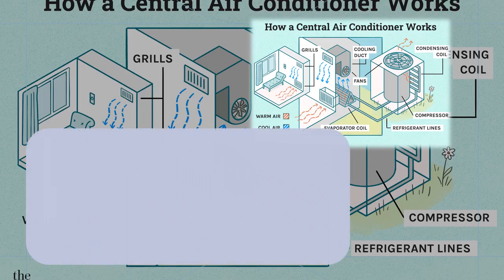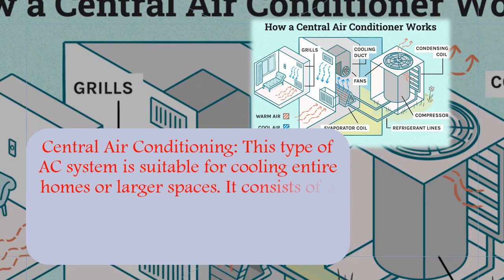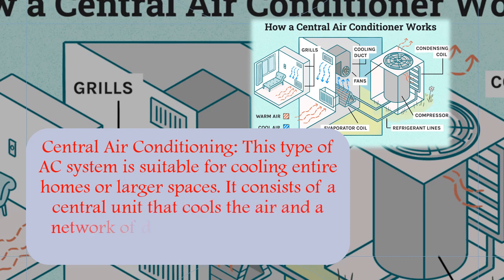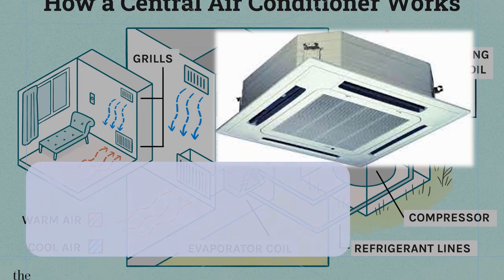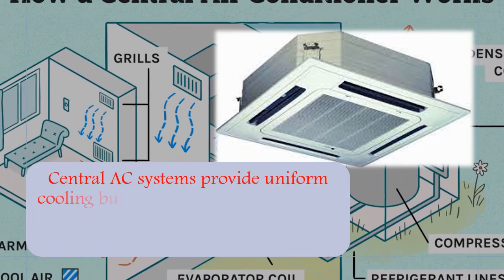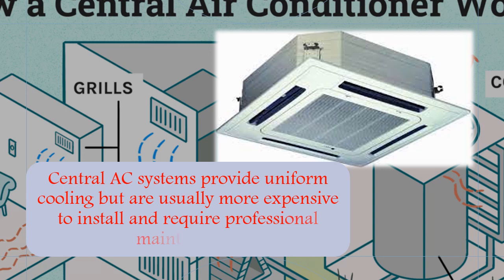Central air conditioning. This type of AC system is suitable for cooling entire homes or larger spaces. It consists of a central unit that cools the air and a network of ducts that distribute the cooled air throughout the building. Central AC systems provide uniform cooling but are usually more expensive to install and require professional maintenance.